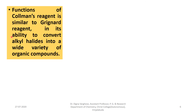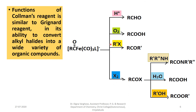The reaction scheme shows: the acyl product reacts with acid to give an aldehyde; with oxygen it is converted to a carboxylic acid; with another alkyl halide it forms a ketone; with halogens it forms an acyl halide, which further reacts with an amine to form an amide, or with water to give an acid, or with an alcohol to give an ester.